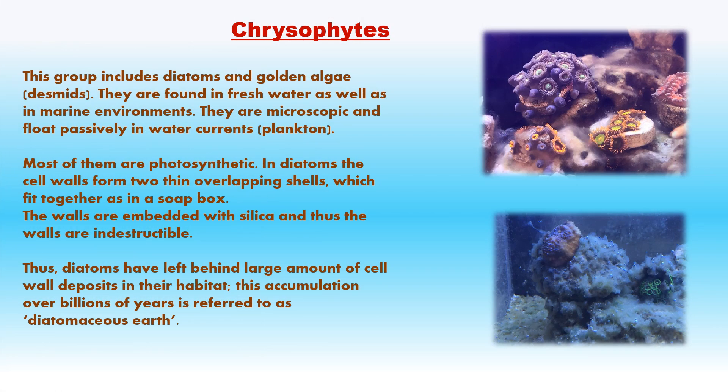Chrysophytes include diatoms and golden-brown algae. They are microscopic and float passively in water currents — called phytoplanktons. Found in freshwater as well as marine water. In diatoms, cell walls form two thin overlapping shells which fit together like a soap box; they have deposits of silica in their cell walls which are indestructible. This accumulation over billions of years has led to large deposits of silica on ocean floors called diatomaceous earth. This gritty soil is used in polishing as a fine abrasive and for filtration of oils and syrups. Examples: Triceratium (diatom), Chrysospherula (golden-brown algae).